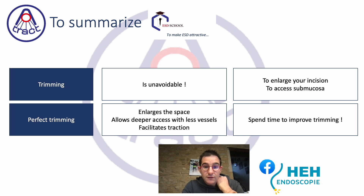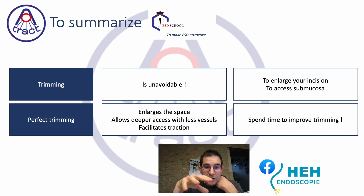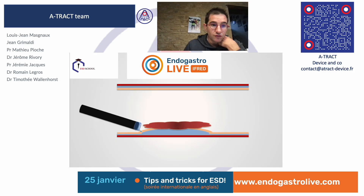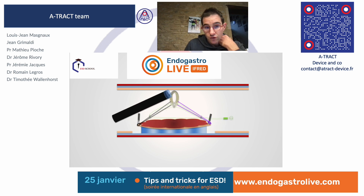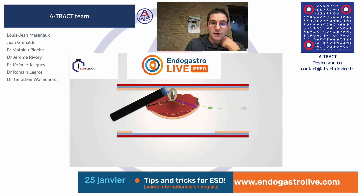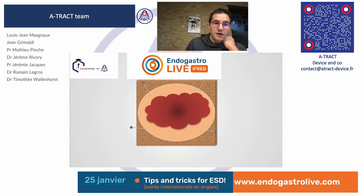Trimming will also help you fix your traction device. This step may appear to be a loss of time at the beginning — after the incision you want to proceed with traction — but doing this period of trimming, which takes a few minutes, makes everything easier in all subsequent steps, including placing traction and achieving the resection. Thank you very much. The next meeting will be at Endo Gastro Live, where we will discuss the 10 key points important for performing an ESD. Please join us for the ESD meeting in English at Endo Gastro Live.